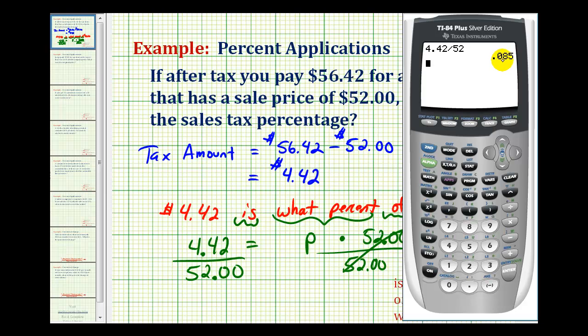So notice how this is giving us the percent as a decimal. So to convert this to a percentage, we need to multiply by 100. So the tax rate is 8.5 percent.